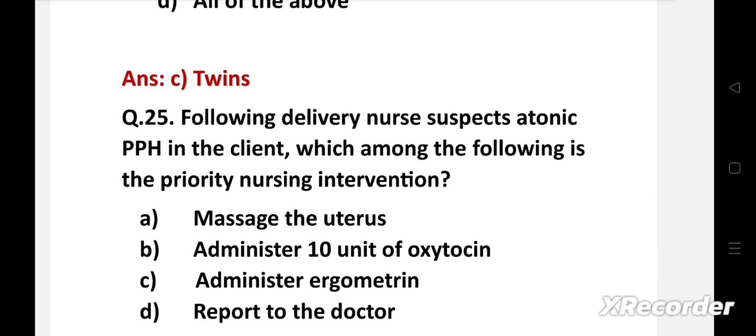Next question: Following delivery, nurse suspects atonic PPH in the client. Which among the following is the priority nursing intervention? Option A: Massage the uterus, B: Administer 10 units of oxytocin, C: Administer ergometrine, D: Report to the doctor.